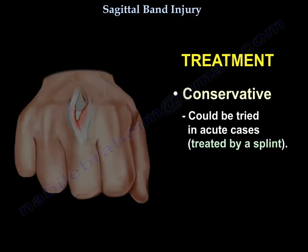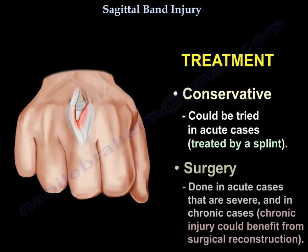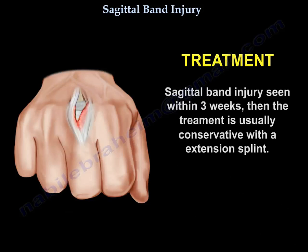This conservative treatment can be tried in acute cases. Acute injury can be treated by a splint, or surgery is done in acute cases that are severe and in chronic cases. Chronic injury could benefit from surgical reconstruction. Sagittal band injury seen within three weeks of injury is usually treated conservatively with an extension splint.